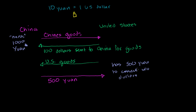With a floating exchange rate, that would increase the demand for yuan and this number would go down — either that number goes down or this number over here goes up. You could say the yuan would become more expensive, which means maybe it's 9 yuan per dollar, or 8 yuan per dollar. Or it could go the other way: for 10 yuan, instead of $1, you'd get $1.10, or $1.20, or $1.30. Either way, the currency would rebalance.